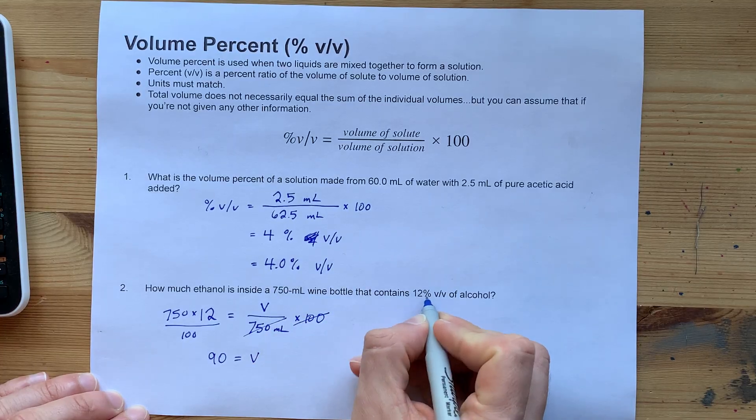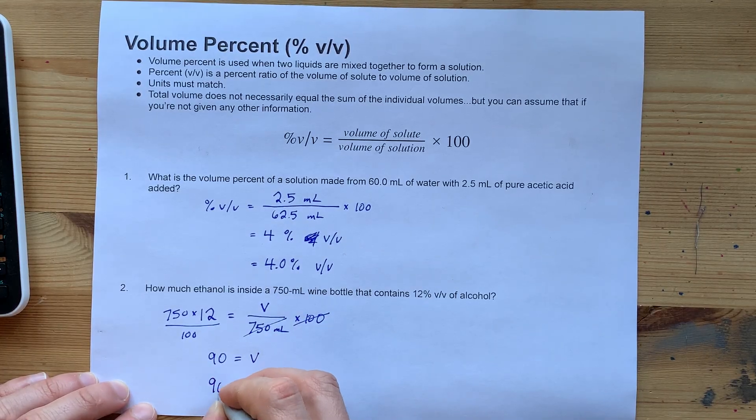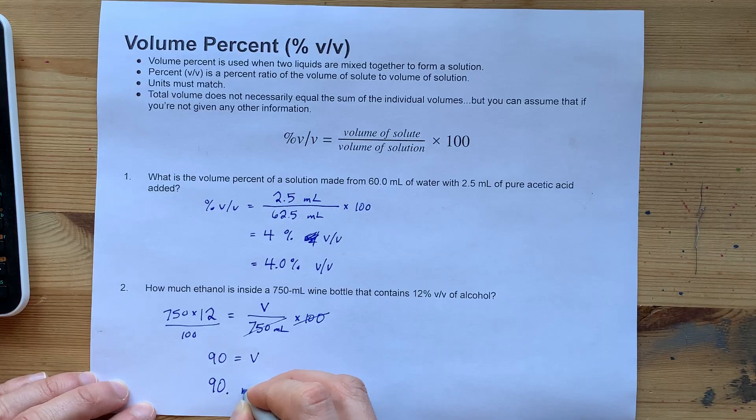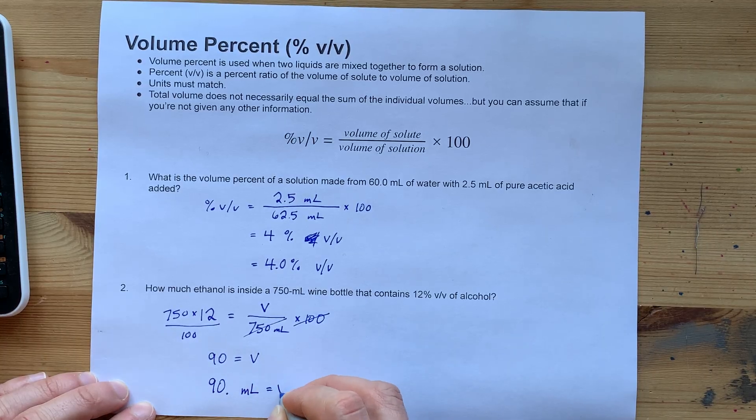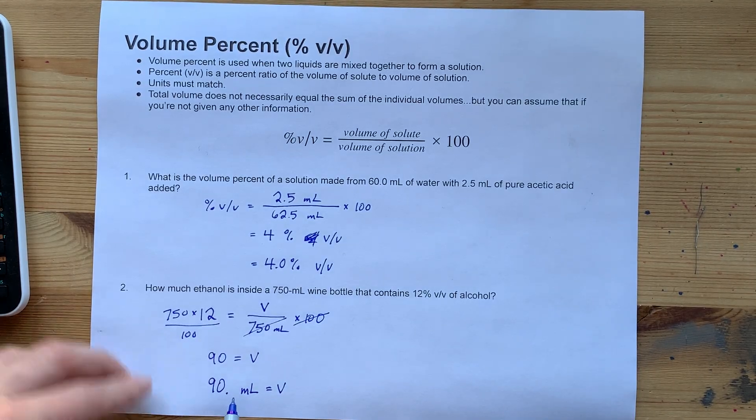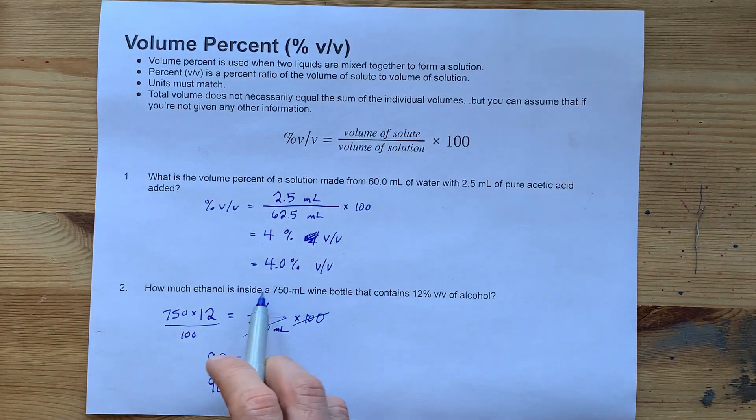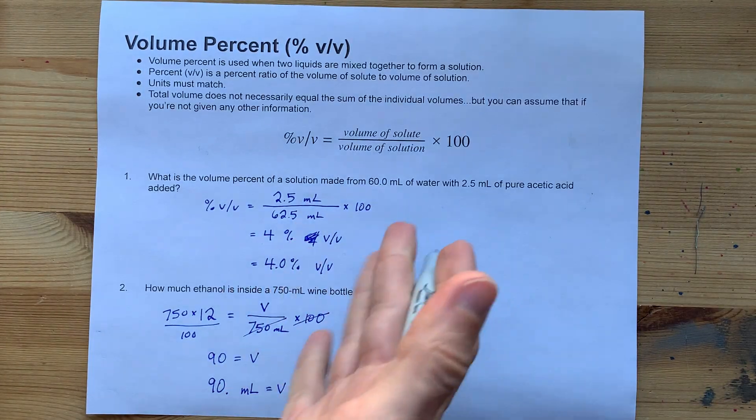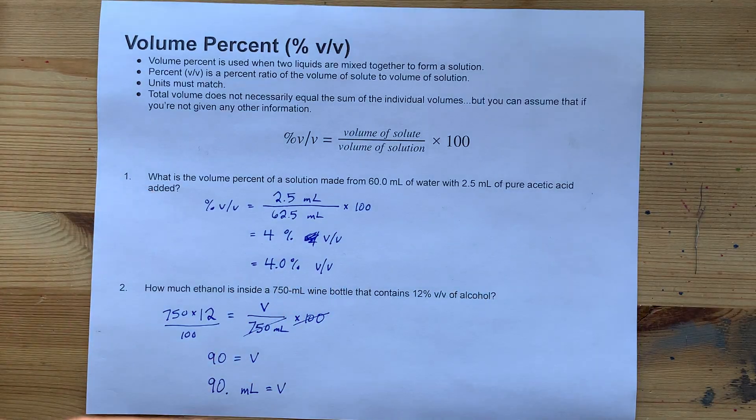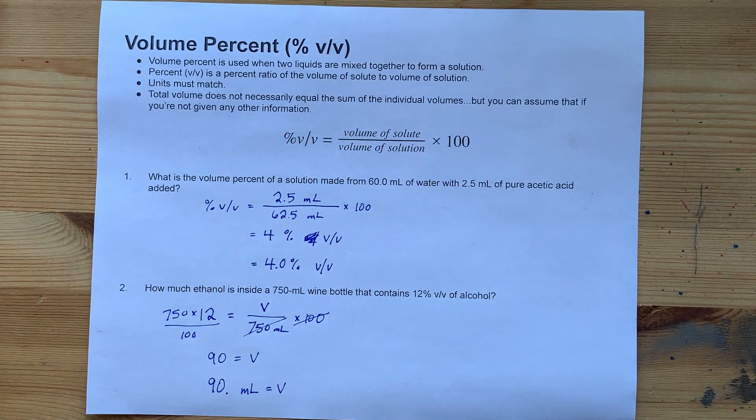Two significant figures, two significant figures. So, I'll write 90 with a decimal point at the end. Milliliters. Cool! 90 milliliters of actual alcohol inside that wine bottle. The rest is water. And you know all the other things that make wine, wine. I wouldn't know anything about that. Best of luck.